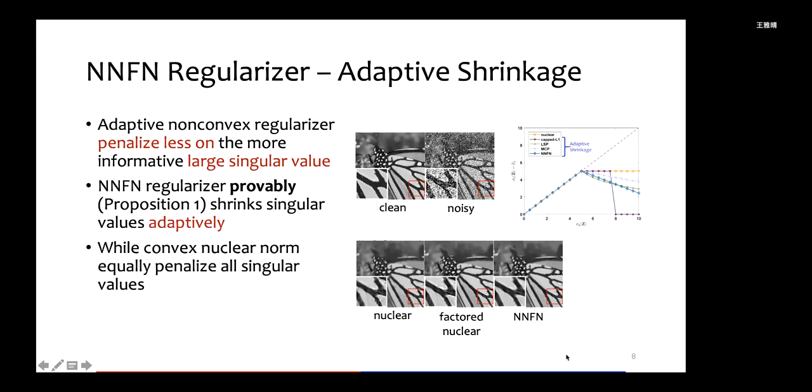So first, what is adaptive shrinkage? Let's introduce it again. It penalizes less on the more informative large singular values. We can see from the upper right figure that the adaptive non-convex regularizers penalize less on the large ones, while the convex nuclear norm equally penalizes all singular values. And from the image denoising test, we can see that indeed the adaptive shrinkage is beneficial to the recovery performance.